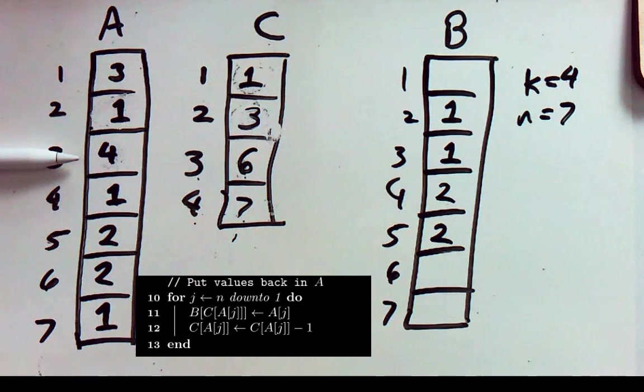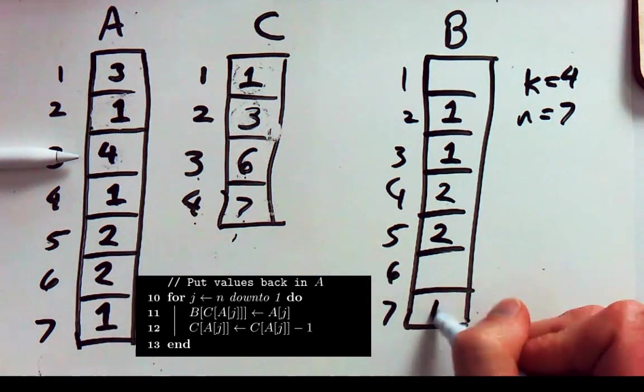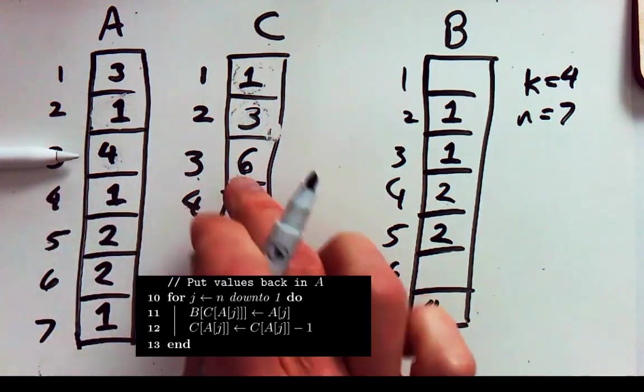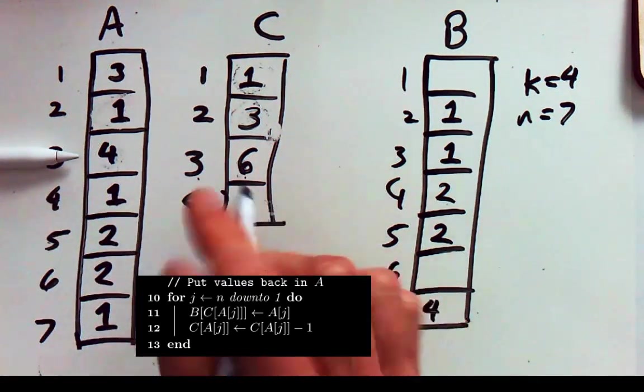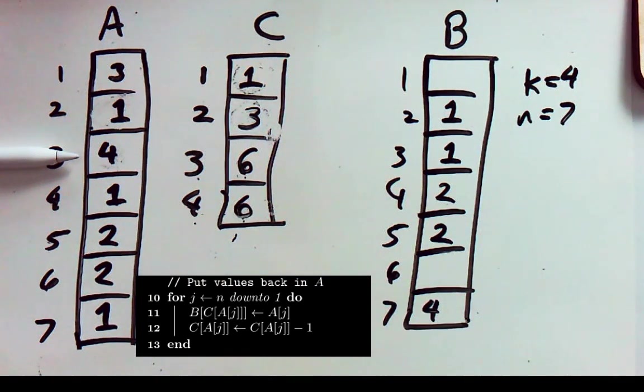Continuing back up our A array. We get to the 4 here. So we look it up. 4 belongs in box 7. So we copy it over. And then we update where the next 1 would belong. So the next 1 will end up going in box 6.